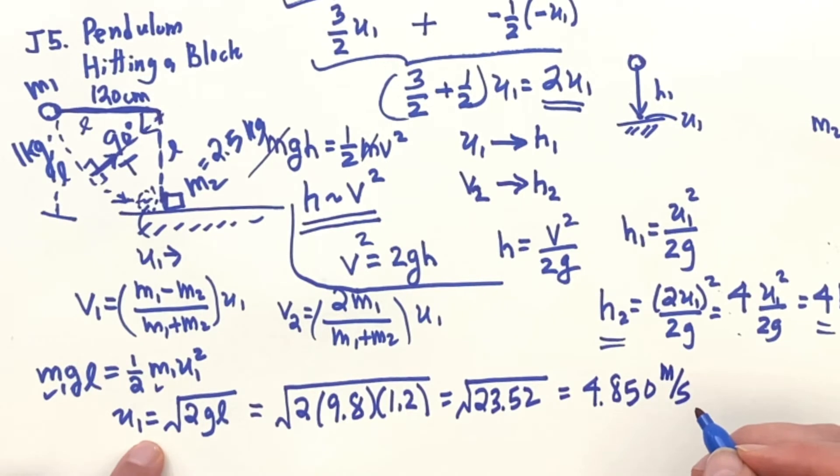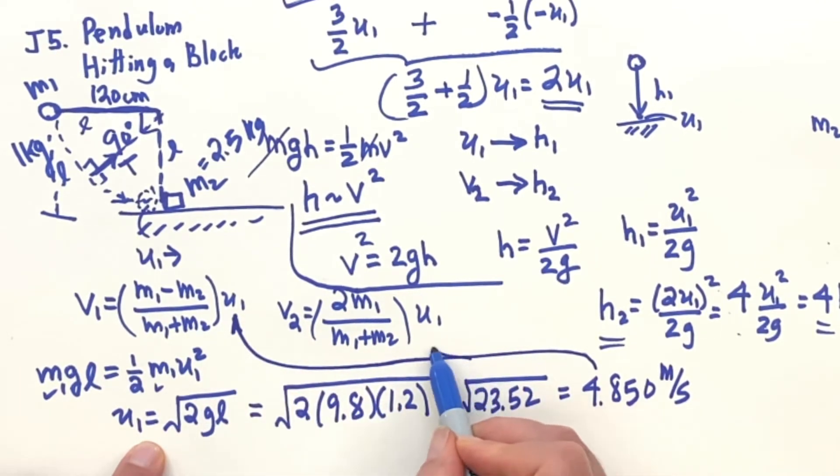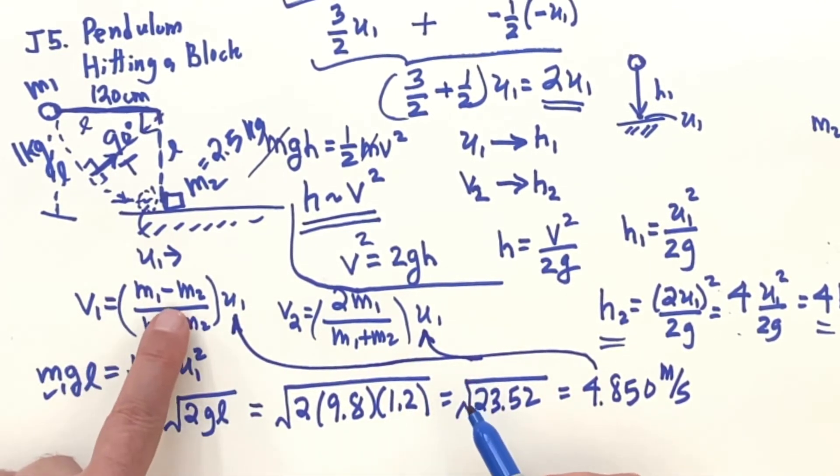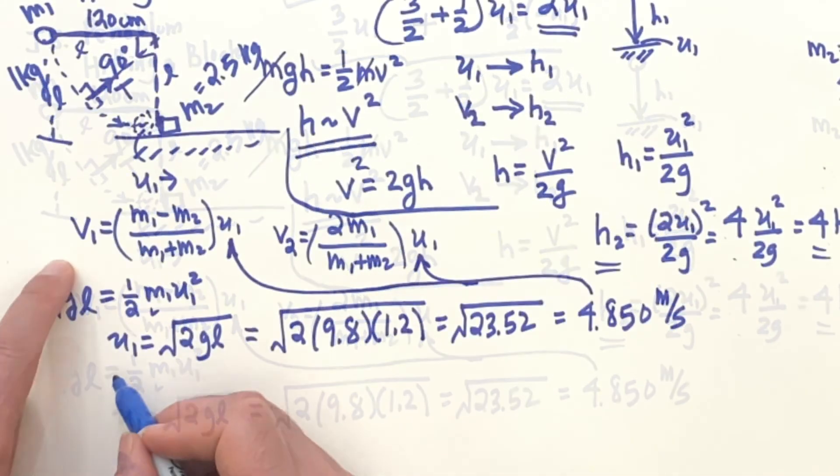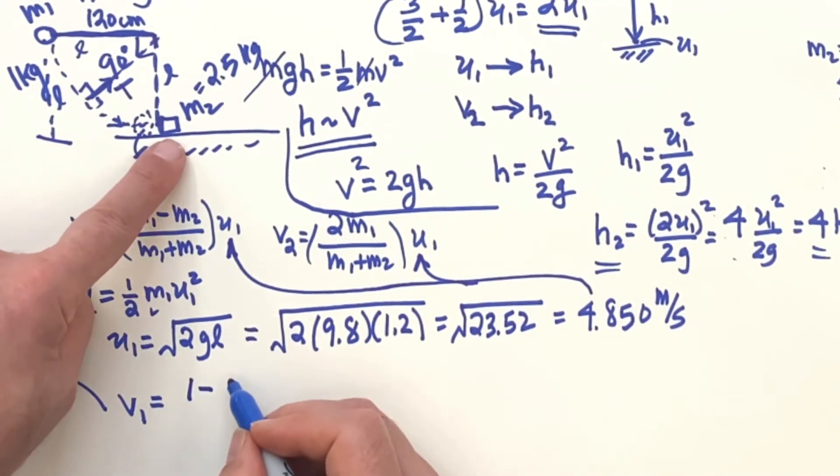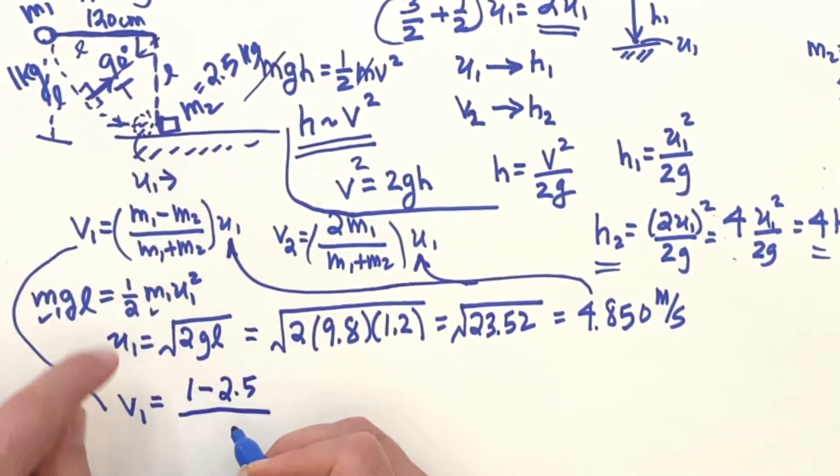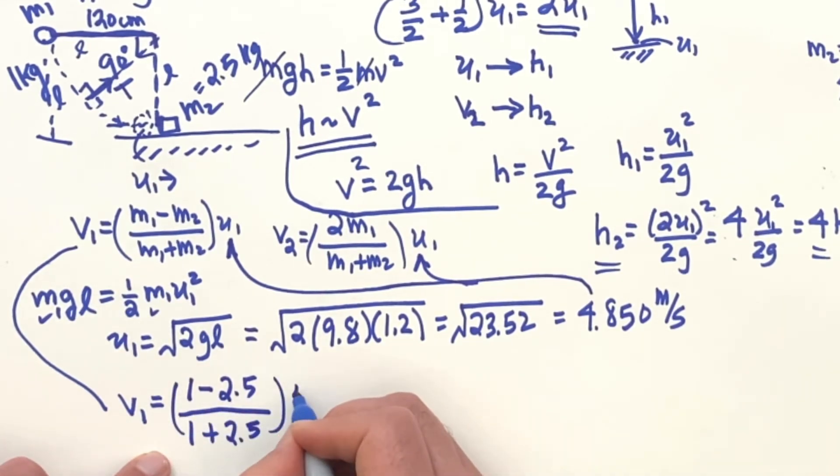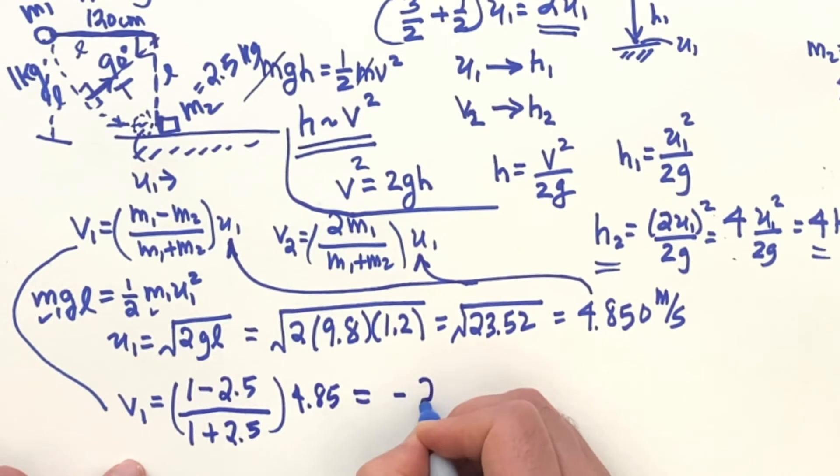And then we go to the formulas, like this one here. This U1 is going to go in here, and it's going to go in there. And we now plug in the masses. So if we plug in the masses for V1, we get... We said V1... We said M1 is 1 kilogram. So we have 1 minus M2 is 2.5. And that's 1 plus 2.5, the 4.85. And that's going to give you, when you work that out, you'll get minus 2.1 meters per second.